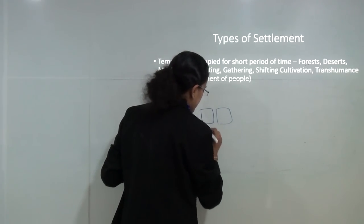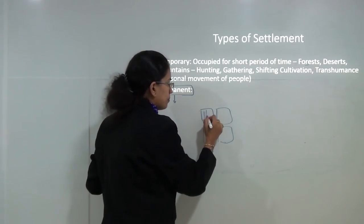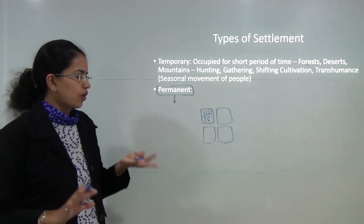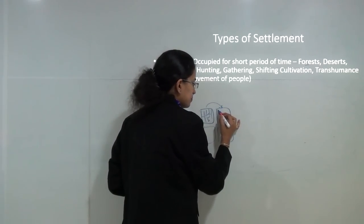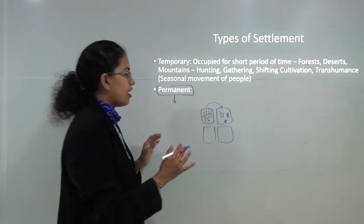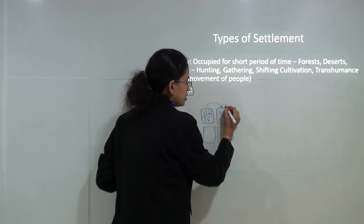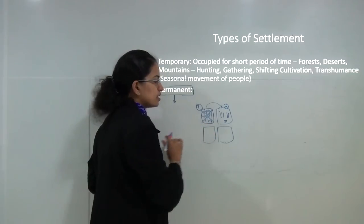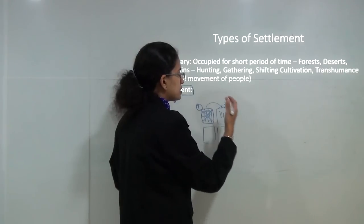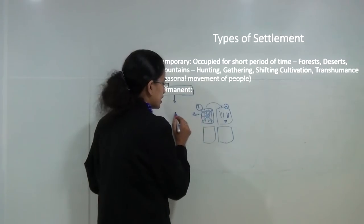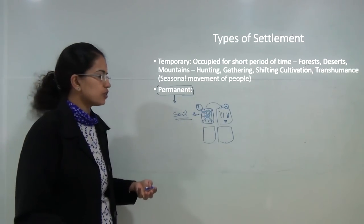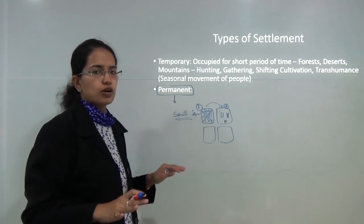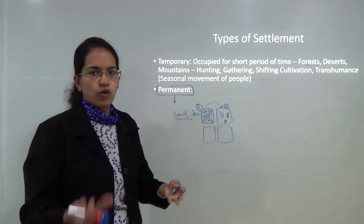Shifting cultivation is still practiced in the northeastern states of India. You grow a crop on land, cut it, and the land becomes barren and no longer fertile. You then shift to another piece of land. After three or four years, the soil replenishes its nutrients and you can use it again. Until then, no crops can be grown on that land — this is shifting cultivation, and people involved in it must move from one place to another.